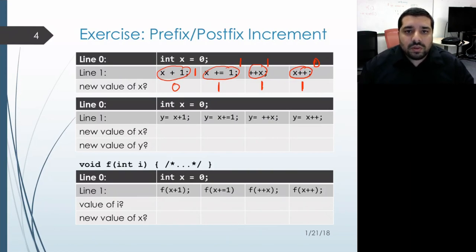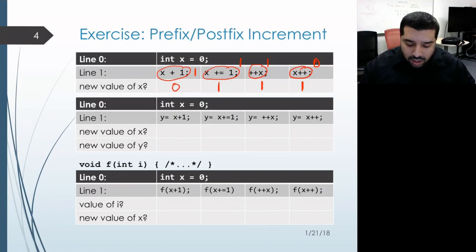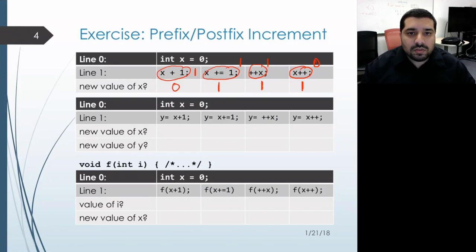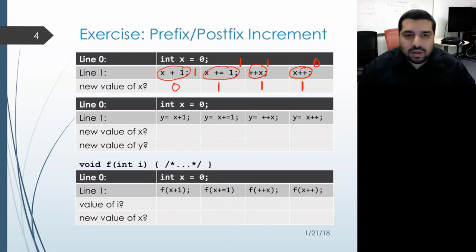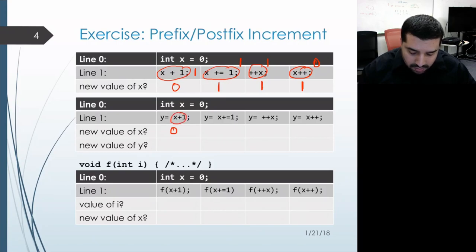Let's look at the second example, which will make this all a little more concrete. We'll take the result of each of our expressions and use that in an assignment to another variable y, and see how the value from the expression differs from what happens to x. So initially we have the assignment y equals x plus 1 — as we saw before, x retains its old value of 0, but the right-hand side evaluates to 1, so y gets the value 1.